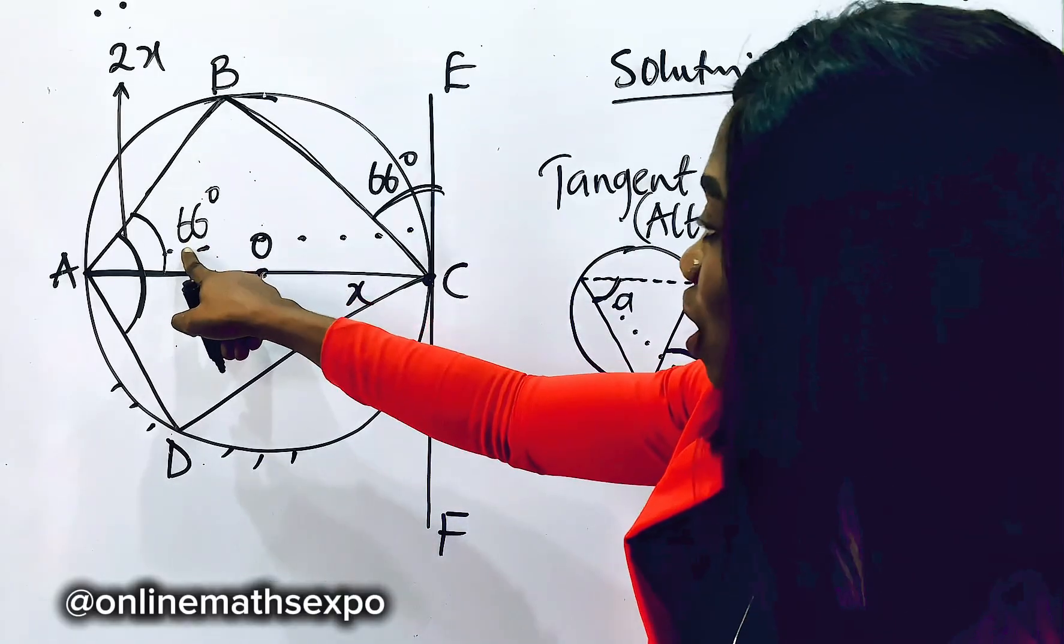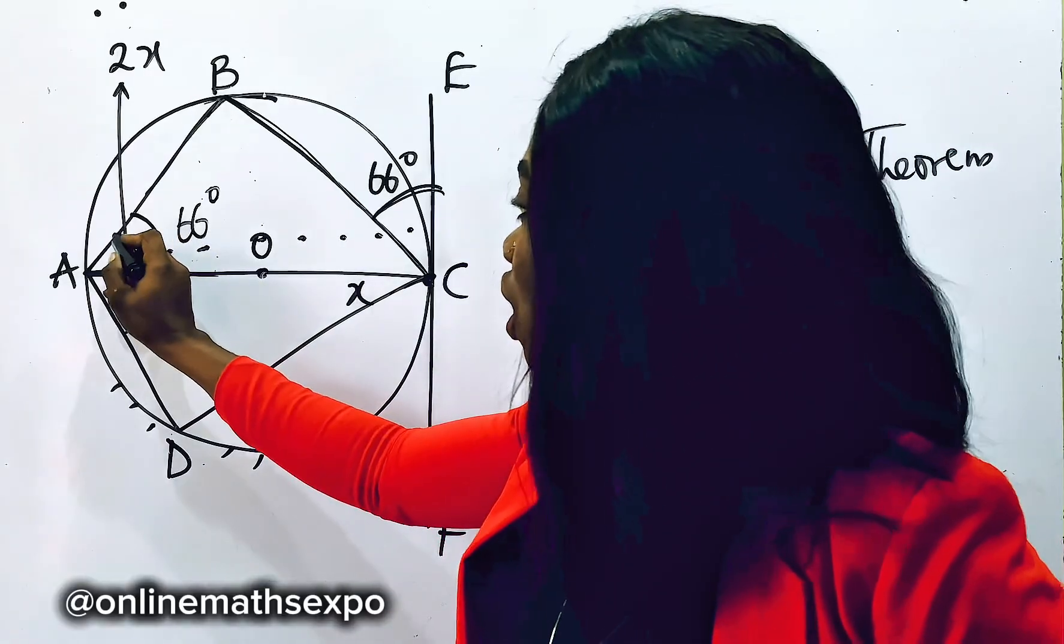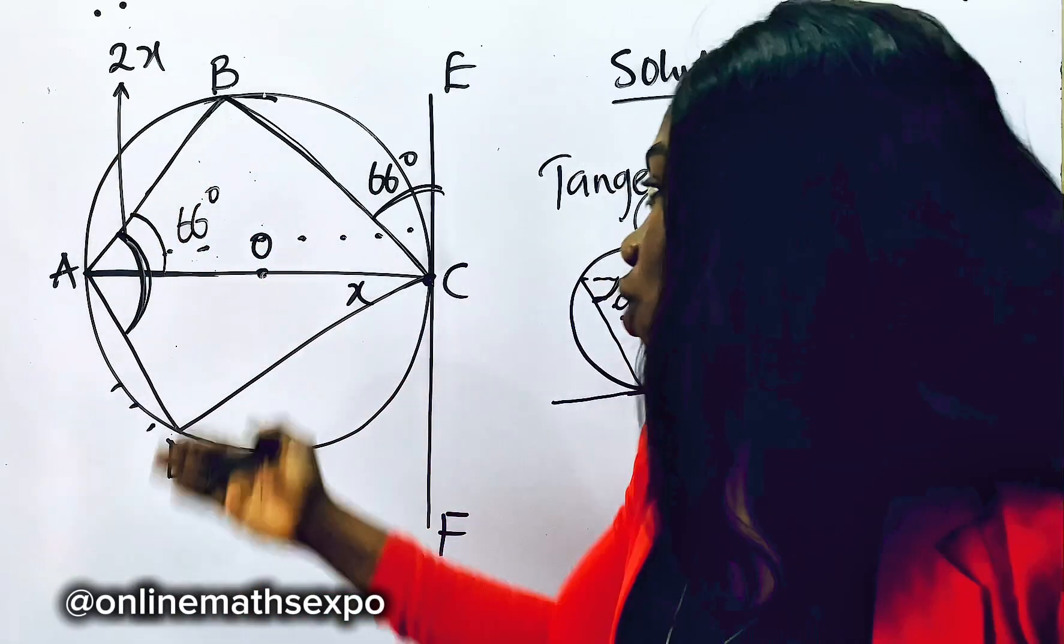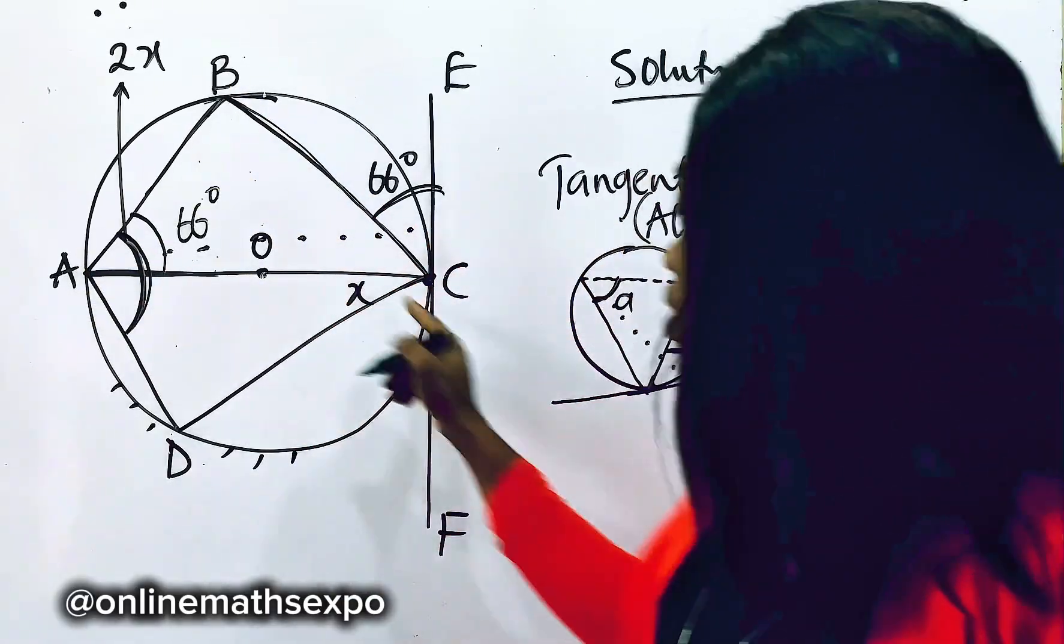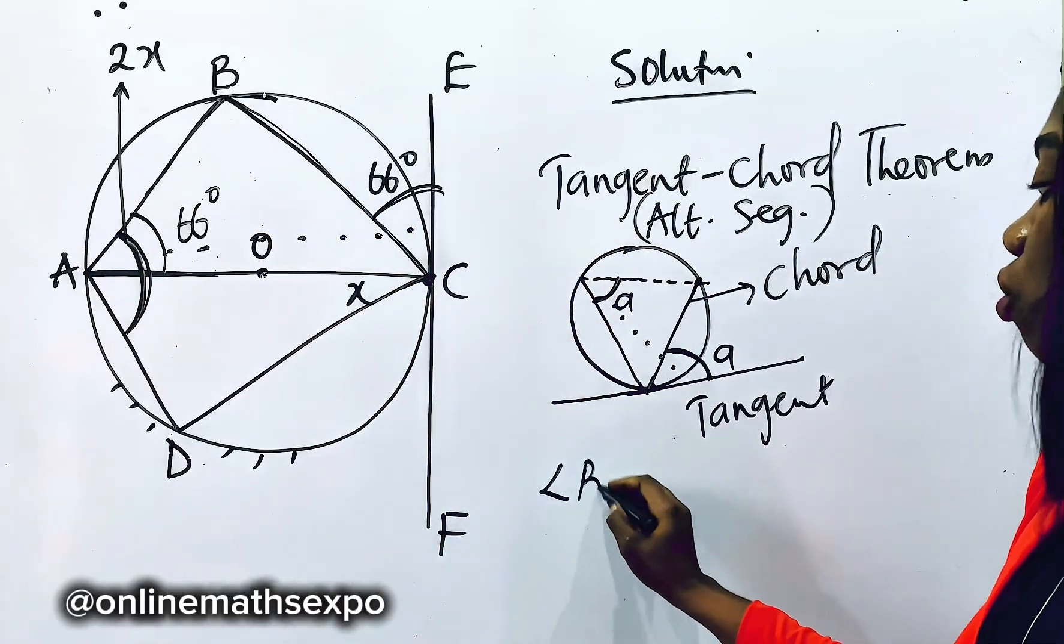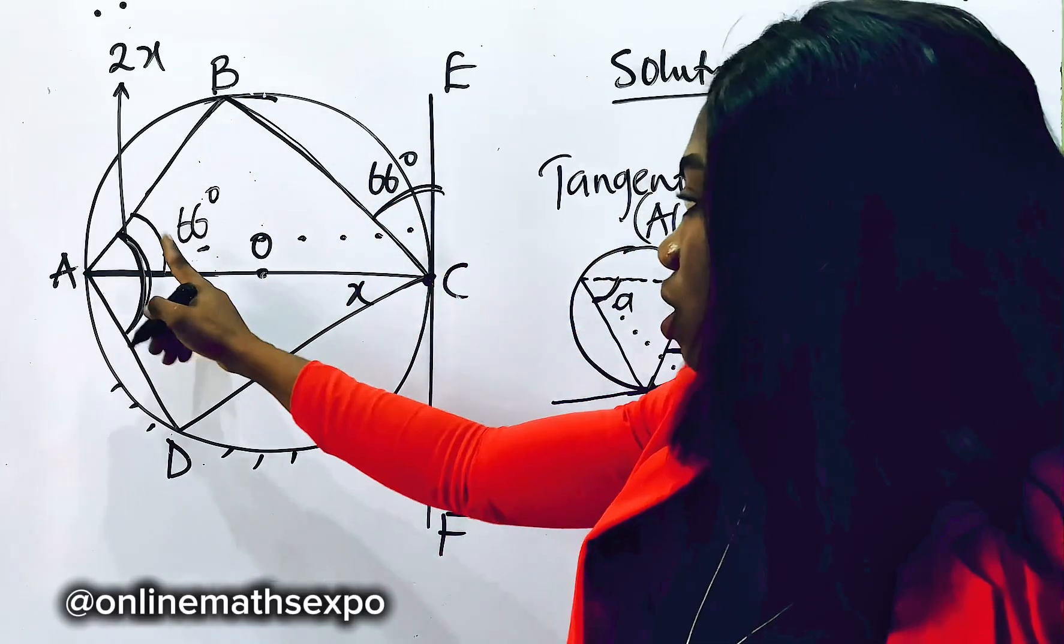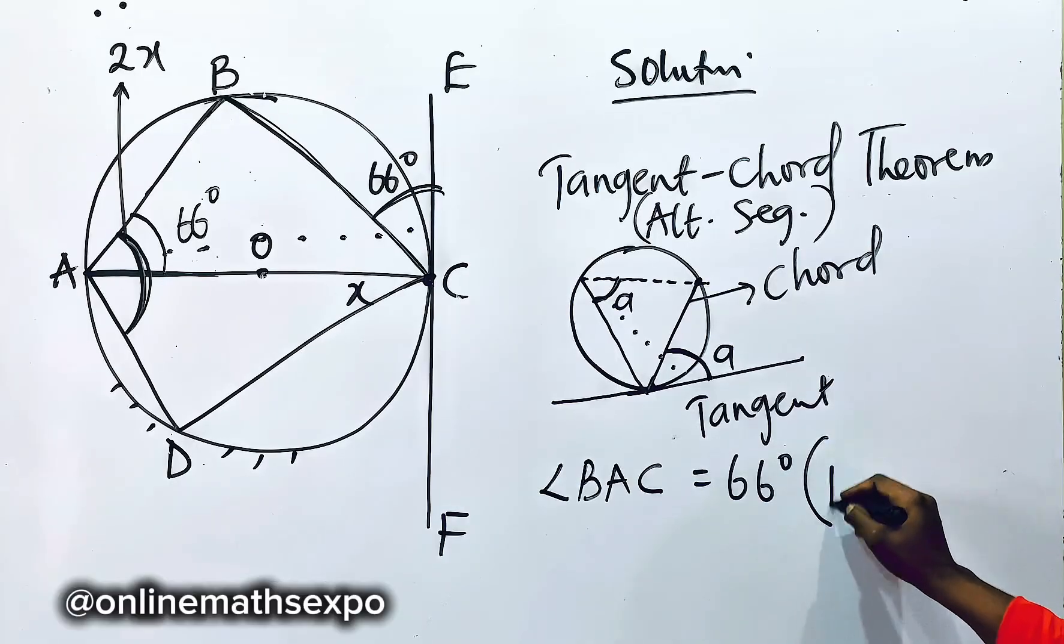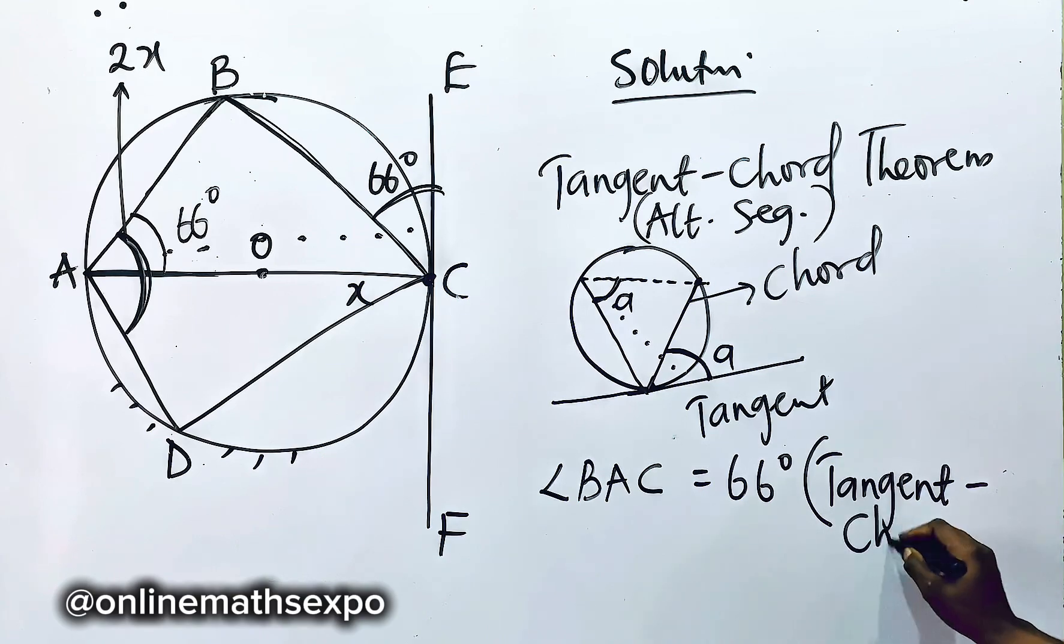So if here is 66, what do you do? Remember the question said the total angle formed here is 2x. So let's name this. So it means that angle BAC. So we name it angle BAC. That means this angle at A is equal to 66. Our reason is our tangent and the chord theorem.